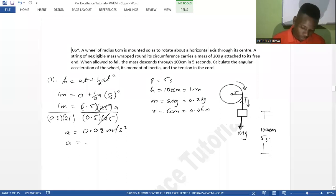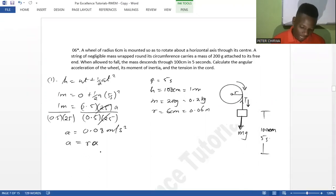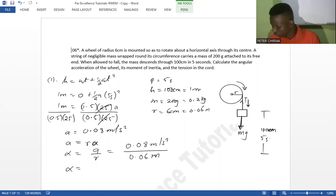Tangential acceleration is given by r times angular acceleration. So after getting this relationship, we know that angular acceleration is basically tangential acceleration over r. So 0.08 m/s² over the radius which is 0.06 meters. Our angular acceleration is going to be 0.08/0.06, which gives us 1.33 rad/s². So you would have found the first part of this question.